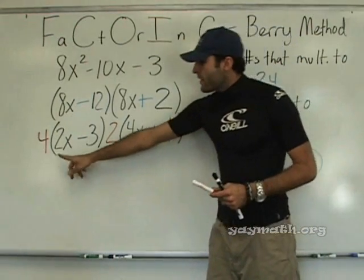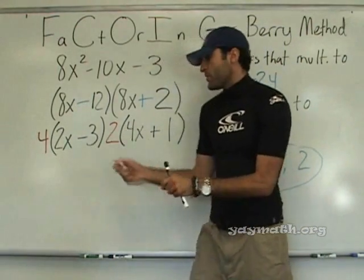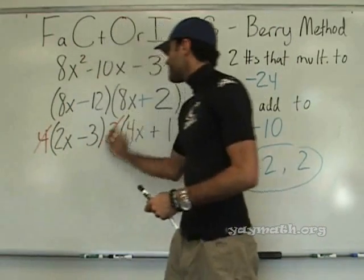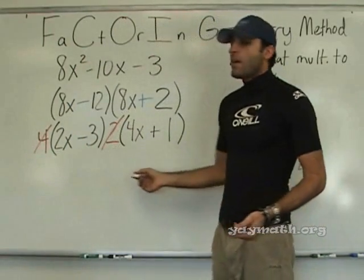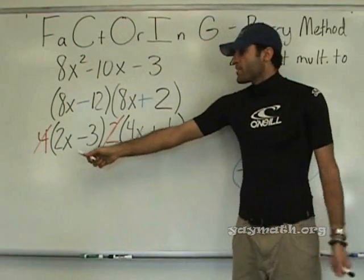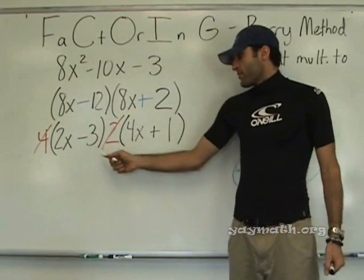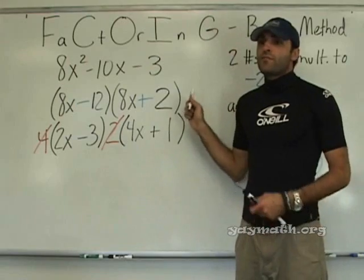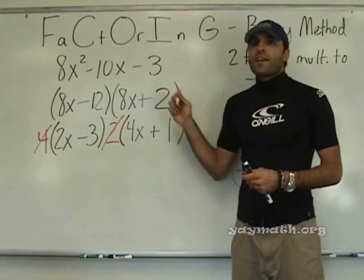The 4 and the 2 drop as we've done before, and the answer is (2x minus 3)(4x plus 1). If you want to foil it, you can verify — it's the same.